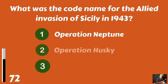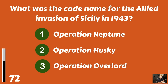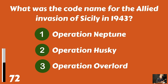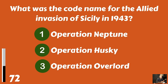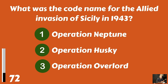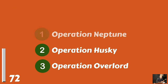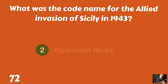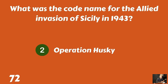What was the codename for the Allied invasion of Sicily in 1943? Operation Neptune? Operation Husky? Or Operation Overlord? And that was Operation Husky.